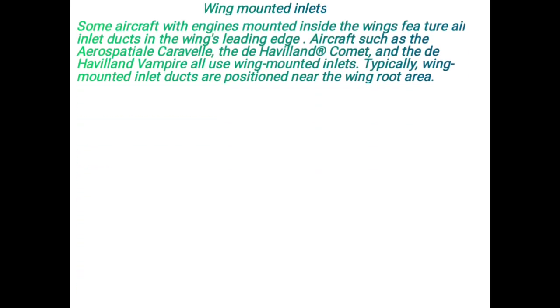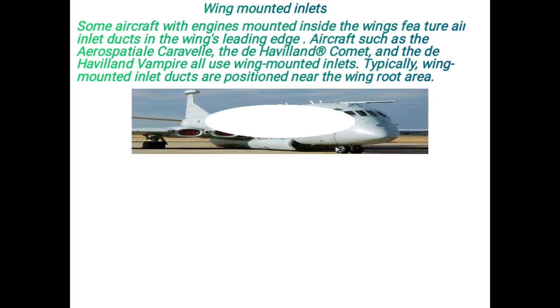Wing mounted inlets: Some aircraft with engines mounted inside the wing feature air inlet ducts in the wing leading edge. Aircraft such as the Aero Pachet, Caraval, the De Havilland Comet, and the De Havilland Vampire all use wing mounted inlets. Typically, wing mounted inlet ducts are positioned near the wing root area. The inlet of the engine is located at the leading edge of the wing and near the wing root area.